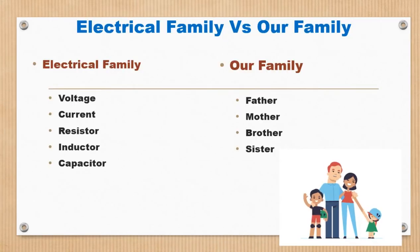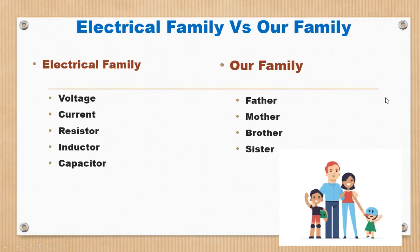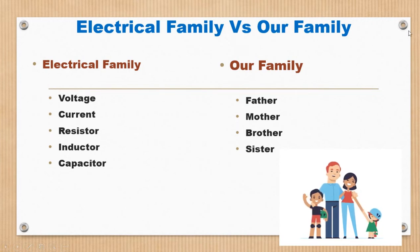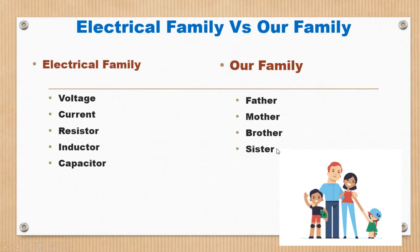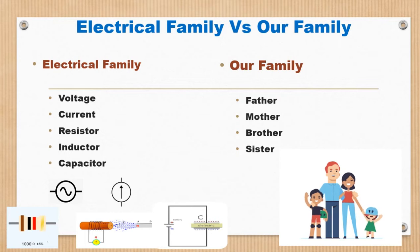The analogy we are supposed to do is between electrical family and our own family. When we come across our family, we have our parents and children. Please consider a small family — no grandfathers or grandmothers. Our task is to map different electrical components like voltage source, current source, resistor, inductor, and capacitors to family members like father, mother, brother, and sisters.